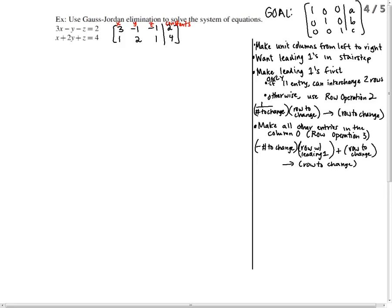For the process, we're going to make the leading ones first. Only if it's the very first one in the 1,1 entry, you can interchange two rows. Otherwise, we use row operation 2, which says 1 over the number to change times the row to change gives the row to change. You're multiplying by the multiplicative inverse of that number, so you get 1.